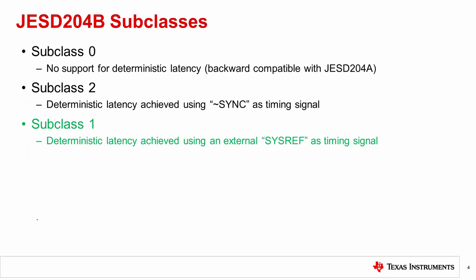There are three subclasses of operation for clock synchronization in JESD204B. We can ignore subclass 0 as it doesn't support deterministic latency between device clocks. Subclass 2 provides deterministic timing, dual-purposing a sync signal which requests an initialization sequence aligning the data serializer and deserializer. This method is not usable for high frequencies and not as popular as subclass 1. The remainder of the presentation follows subclass 1 operation.